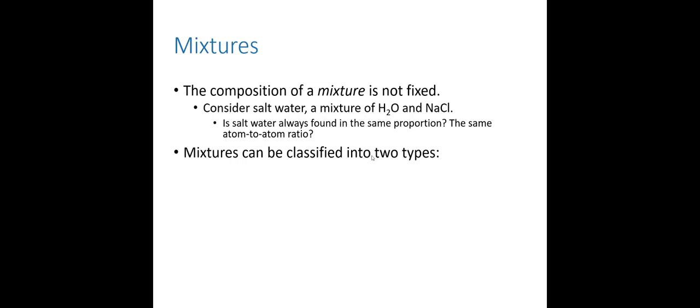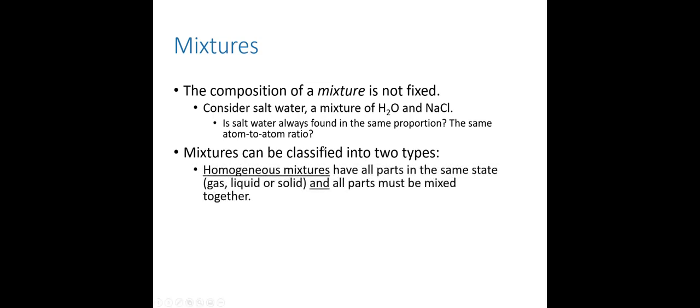We can further break down mixtures into two classifications. First, we have homogeneous mixtures, in which case all of the parts are in the same state. So it's either a gas throughout, or a liquid, or a solid. And furthermore, all of the parts must be mixed together. You can essentially use your eyes to make the judgment on whether something is a homogeneous mixture or not. But if you look at it and all of the parts look visually inseparable, it looks consistently the same all throughout, we can call it a homogeneous mixture.